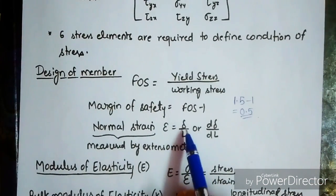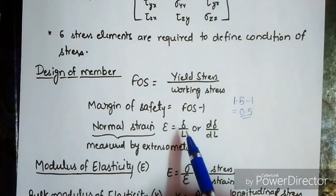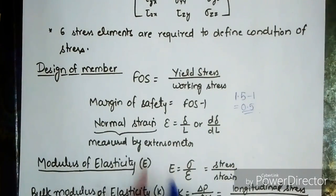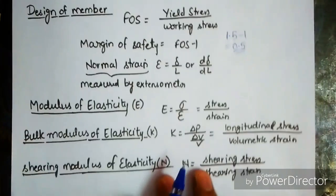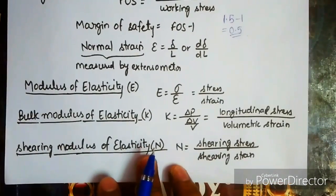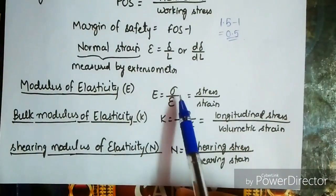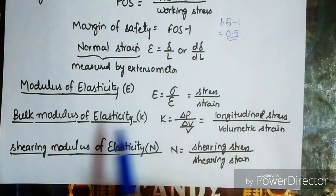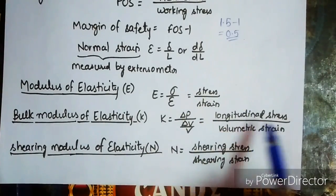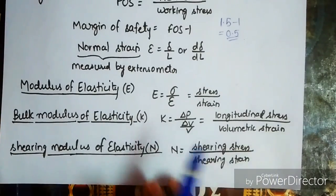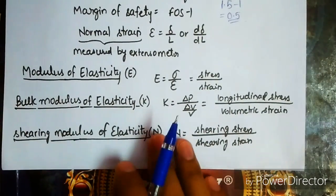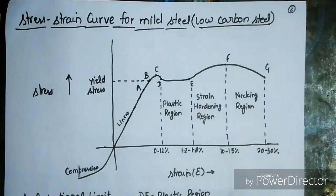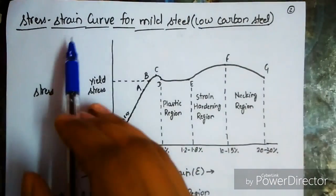Normal strain is deformation upon length (delta by dl), measured by an extensometer. Modulus of elasticity E equals sigma by strain, that is stress upon strain. Bulk modulus of elasticity is longitudinal stress upon volumetric strain, and shearing modulus of elasticity is shearing stress upon shearing strain.